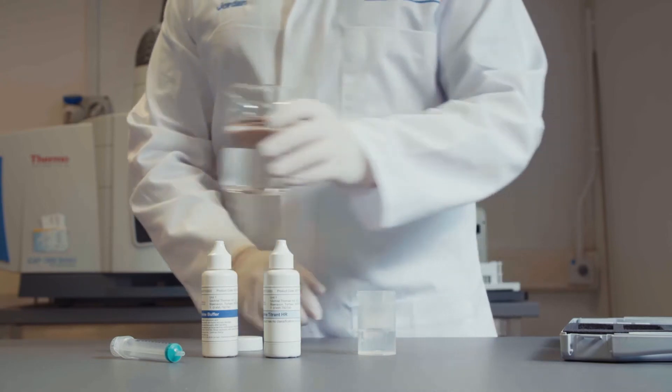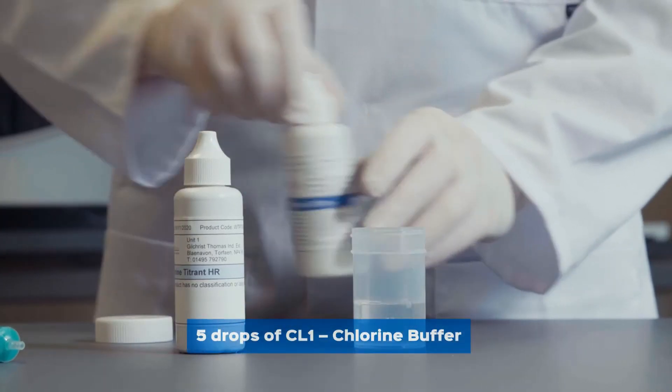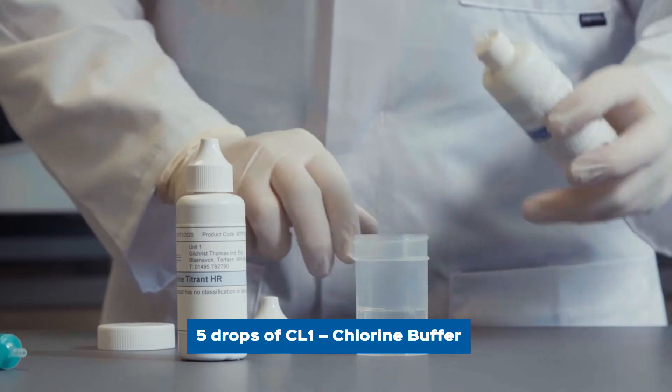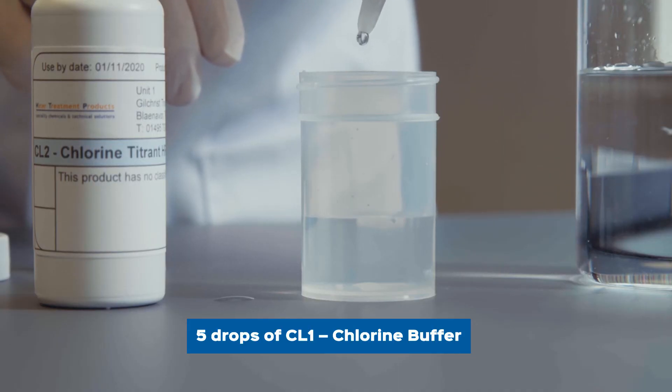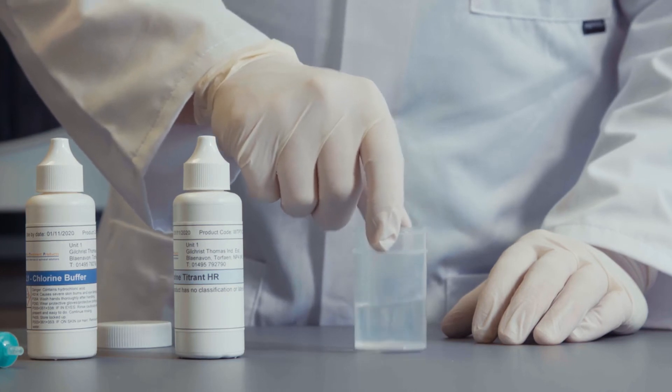Next, take CL1 Chlorine Buffer and add 5 drops to the test sample by gently squeezing the bottle. Swirl the sample pot thoroughly to mix.